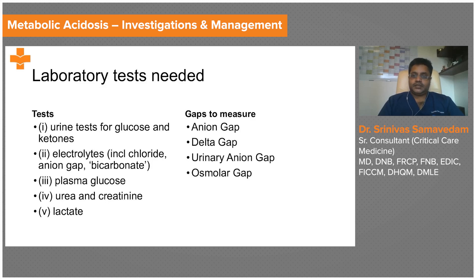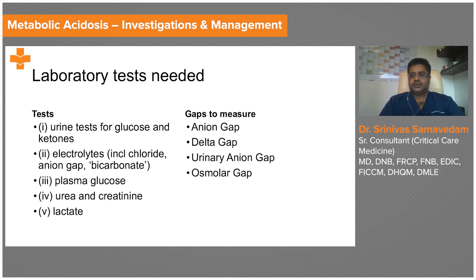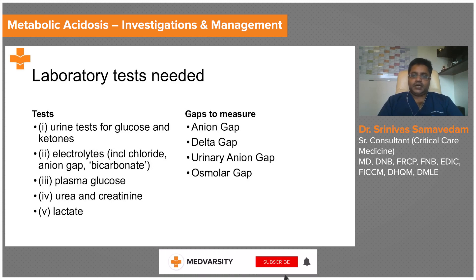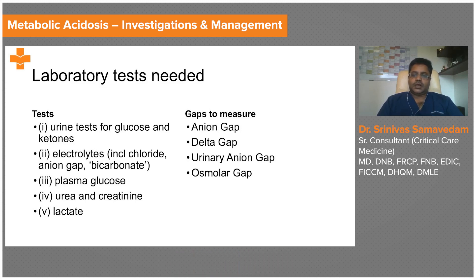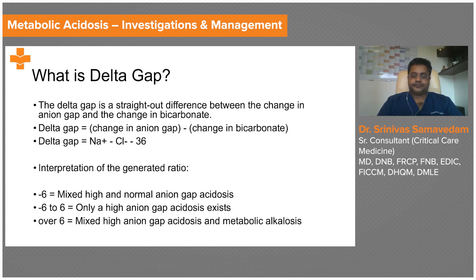When you try to assess a patient with metabolic acidosis, certain gaps need to be measured. What are these gaps and what is their implication? The first one, as mentioned, is the anion gap. The second one is the delta gap. The third one is the urinary anion gap. And the fourth one is the osmolar gap.